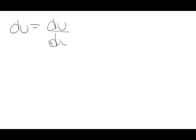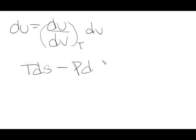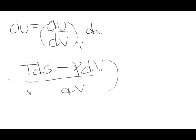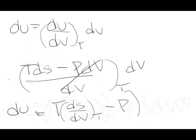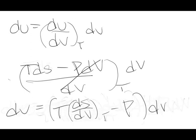We have dU = (∂U/∂V)_T dV. Plugging in the fundamental equation dU = T dS − P dV and dividing through by dV, we get (∂U/∂V)_T = T(∂S/∂V)_T − P. The problem is that we have no equation for S as a function of V, so we need to find a Maxwell relationship for (∂S/∂V)_T.